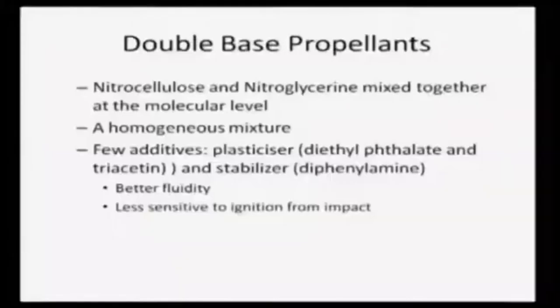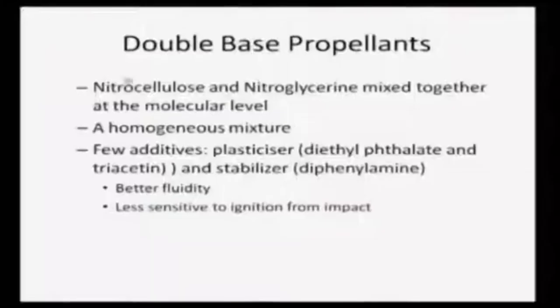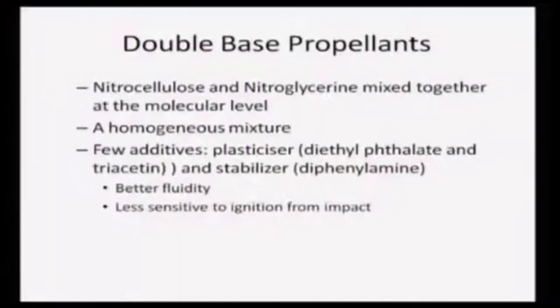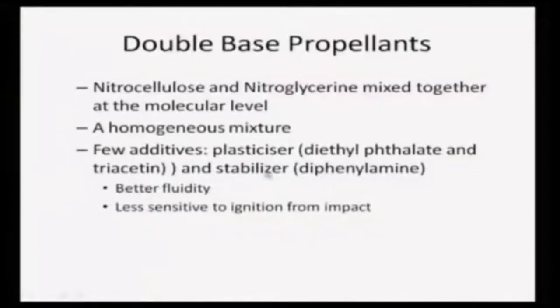The first type is double base propellants, which are typically nitrocellulose and nitroglycerin mixed together at the molecular level — one is the fuel, the other the oxidizer — creating a homogeneous mixture. To achieve molecular-level mixing, additives are required: a plasticizer, typically diethyl phthalate and triacetin, which acts like a binding agent, and a stabilizer such as diphenylamine that controls the burning rate like a damper to achieve the required burning rate.